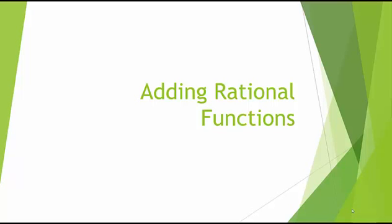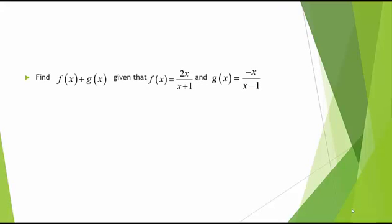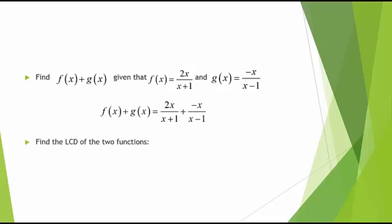Today we're going to learn about adding rational functions. We're going to add f(x) plus g(x), given that f(x) equals 2x divided by x plus 1, and g(x) equals negative x divided by x minus 1. We write the functions: f(x) plus g(x) equals 2x divided by x plus 1, plus negative x divided by x minus 1.